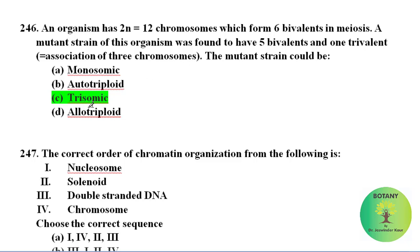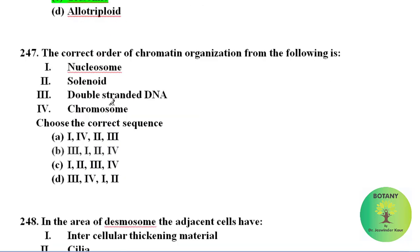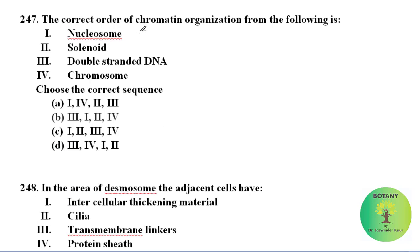The correct order of chromatin organization from the smallest to largest involves solenoid organization. The correct sequence is 3, 1, 2, and 4.